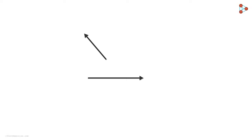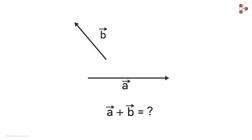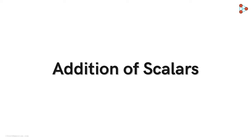Suppose we have two vectors A and B. Can you tell me if we can add these vectors? What does it even mean to add two vectors? To understand this, let's first look at addition of scalars first.